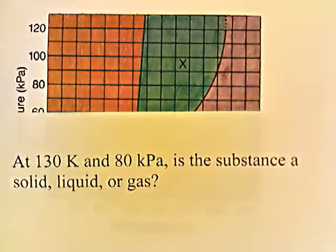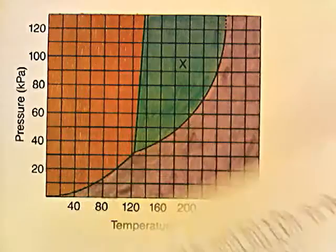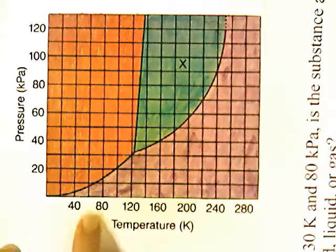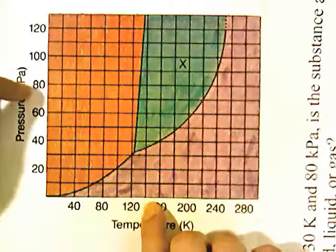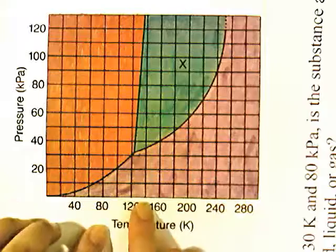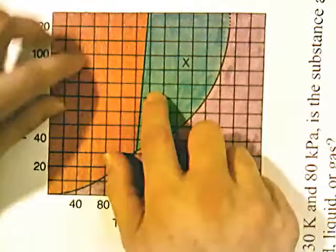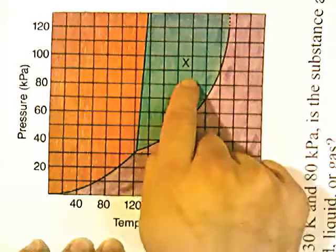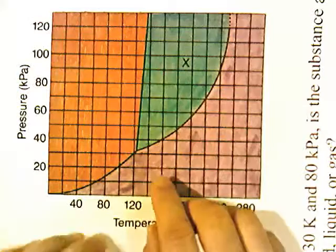At 130 Kelvin and 80 kilopascals, is the substance a solid, liquid, or a gas? This one is a little bit trickier. 130 Kelvin is between the 120 and 140 lines, and 80 kilopascals — going up — lands us right on the line between the orange and the blue region. So it's between the solid and the liquid, meaning both solid and liquid can exist at these conditions.